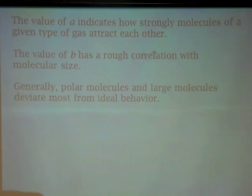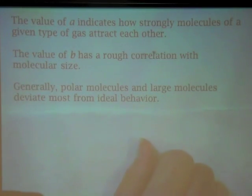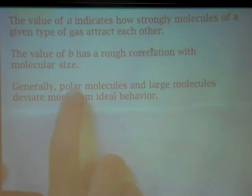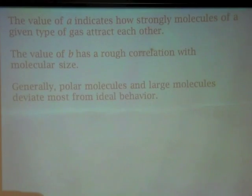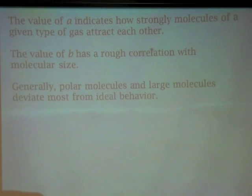Generally, polar molecules and large molecules deviate most from ideal behavior. At this point, large means the molecule with the greatest molar mass, and looking at past AP questions, that's what it's been based on — molar mass, and then polarity once we can determine whether molecules are polar or not. So, the conditions under which gases deviate from ideal behavior are when their volumes are very tiny — when we compress them and push them really close together. Then we have to take into account how sticky they are with one another, and how much space the actual molecule itself takes up. And that's the end of gases.